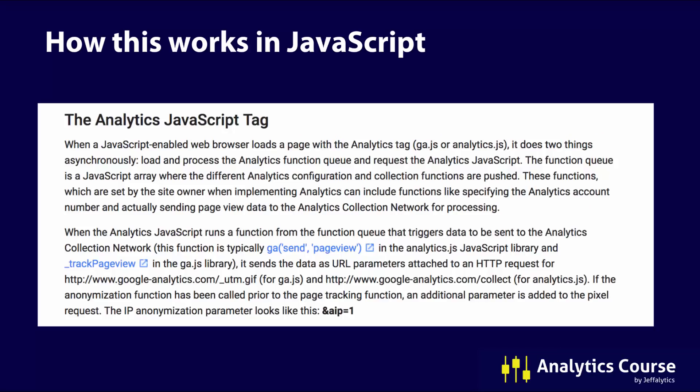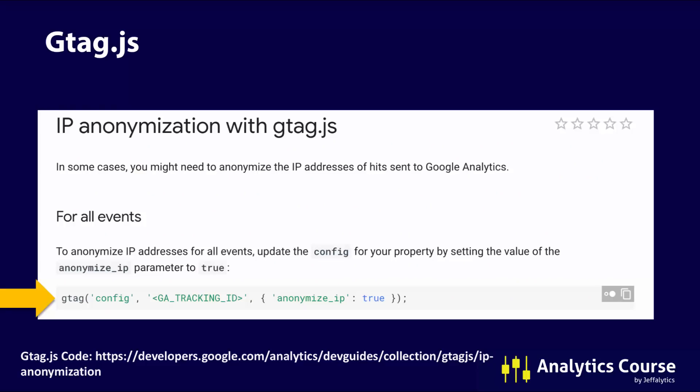There are a few different ways to implement IP anonymization. The most relevant is by updating your Analytics JavaScript tag. The syntax differs depending on which version of Google Analytics you have. Starting with the newest version, gtag.js: within your gtag, you use a config parameter, put your Google Analytics tracking ID, and at the end add the parameter anonymize_ip set to true. I'd recommend going to Google's developer website to copy this code directly so you don't get any syntax wrong.